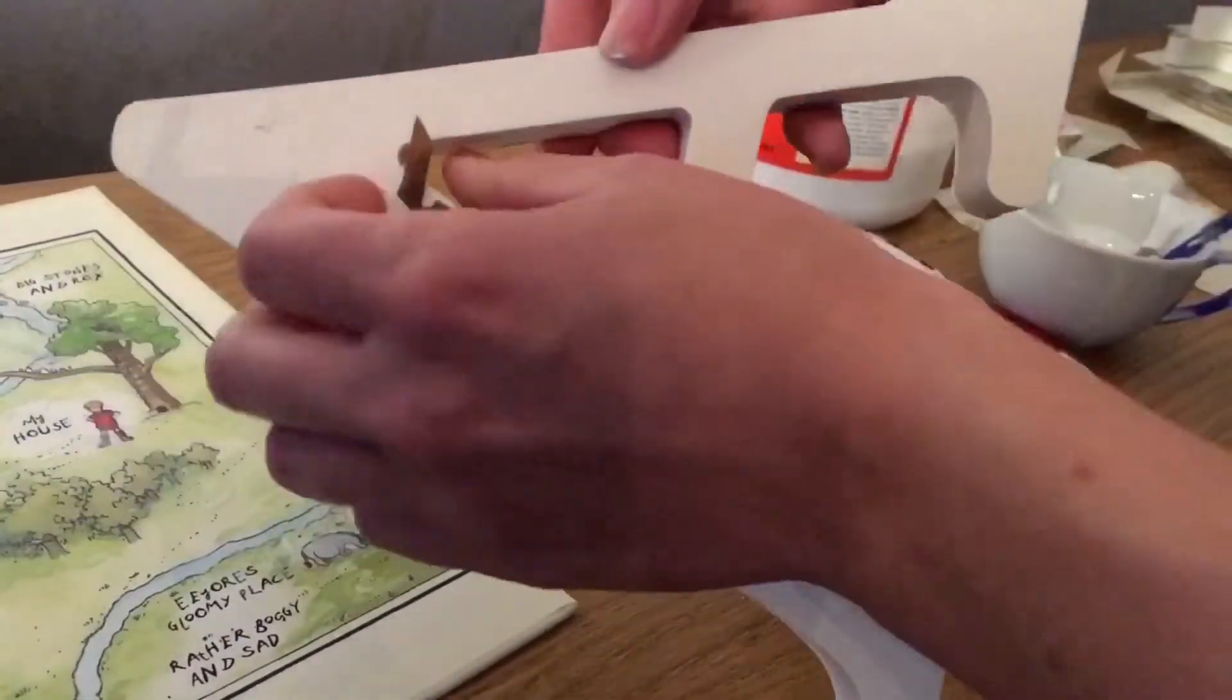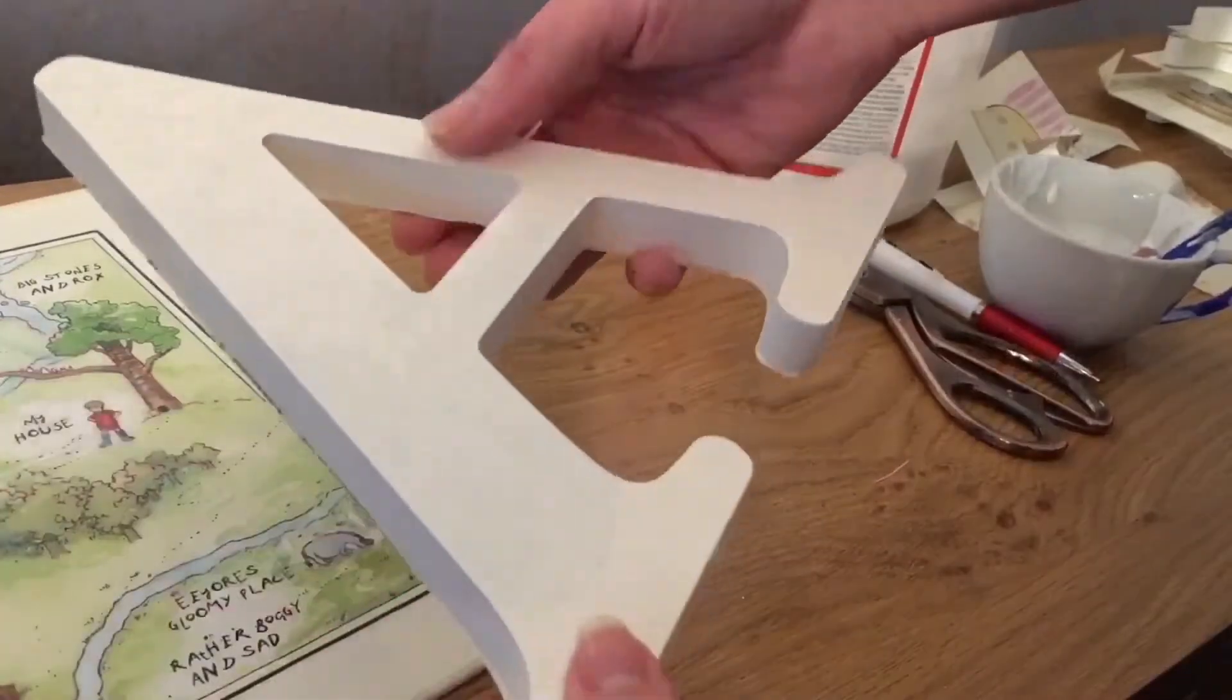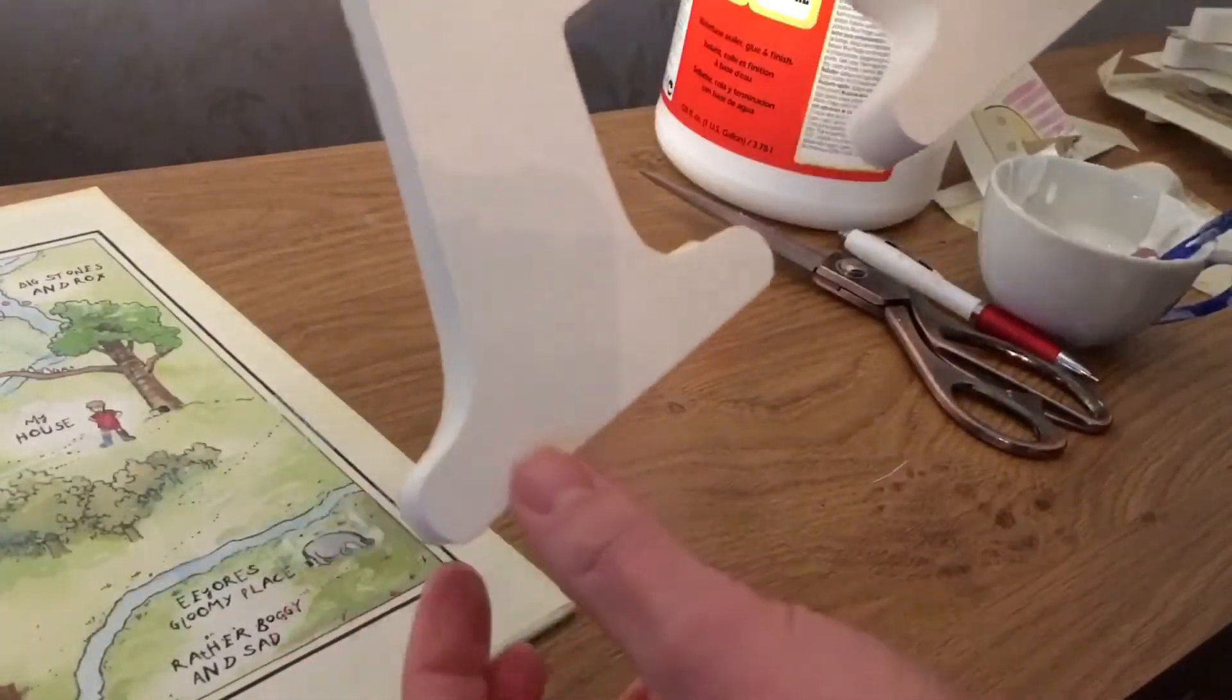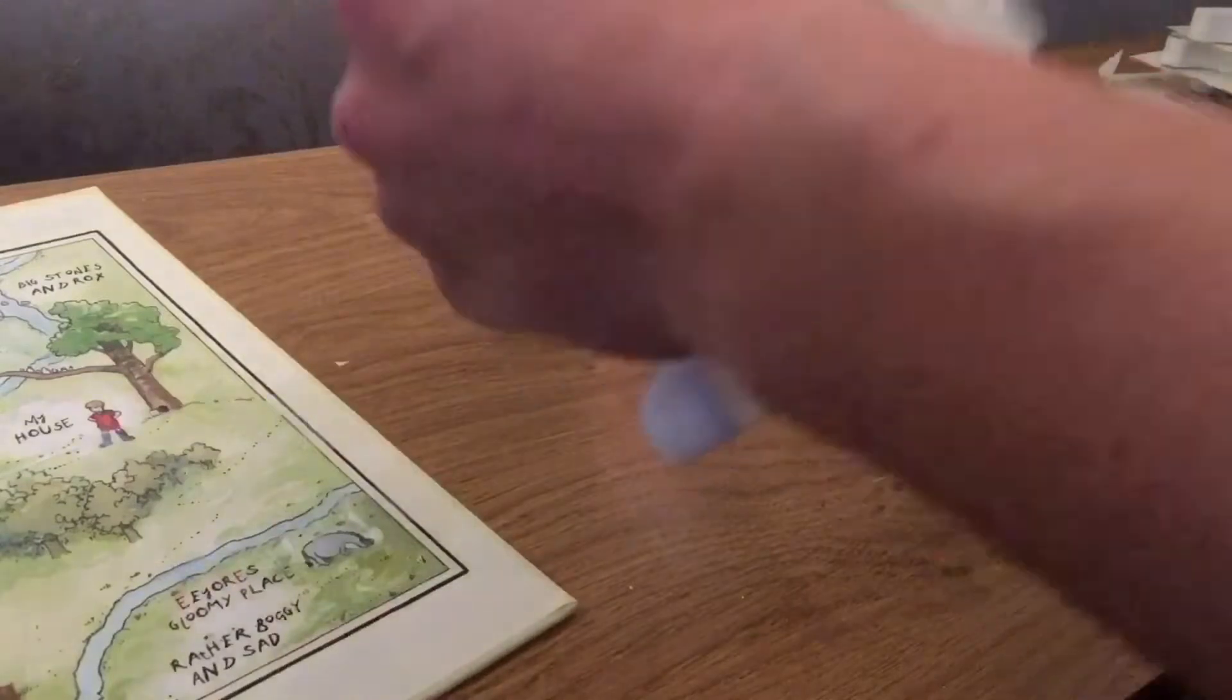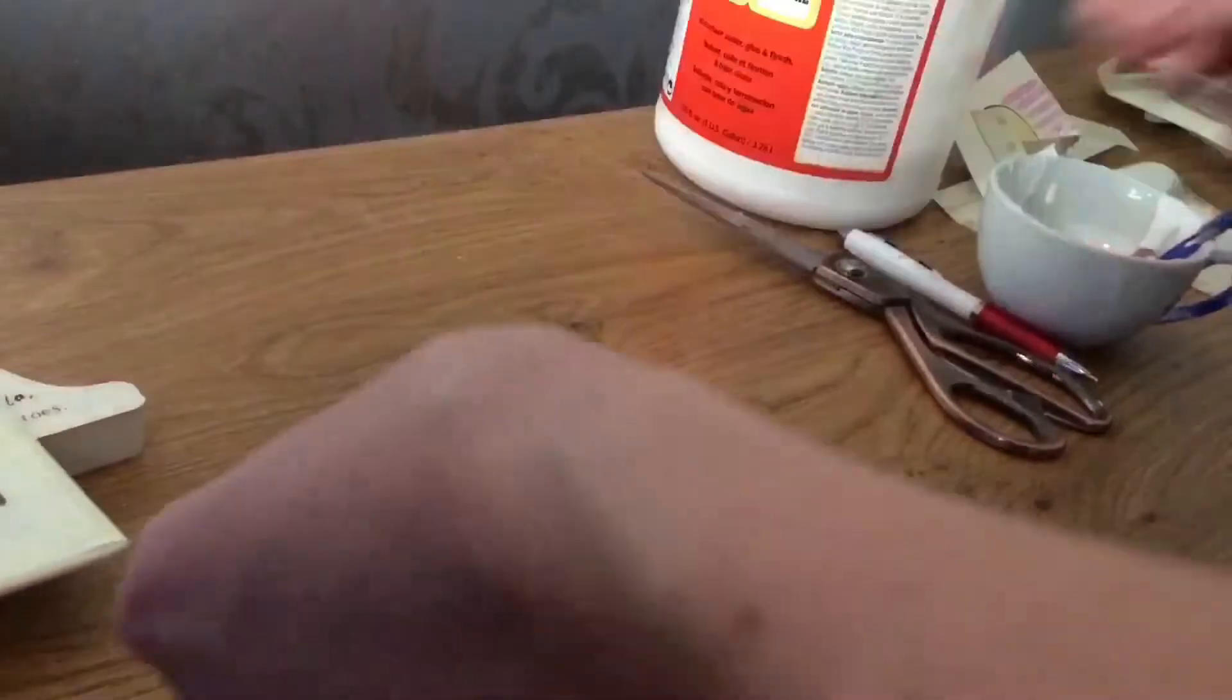As you can see there is excess paper left over which is fine because we will trim it off in the end. But right now we're going to leave them to dry as it's too wet to trim. We'll move on to the next letter.